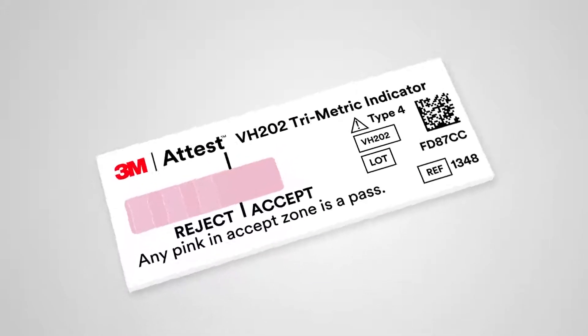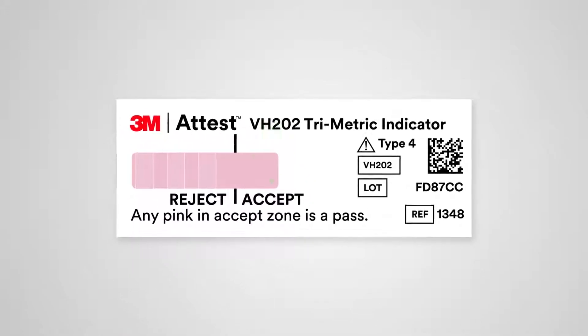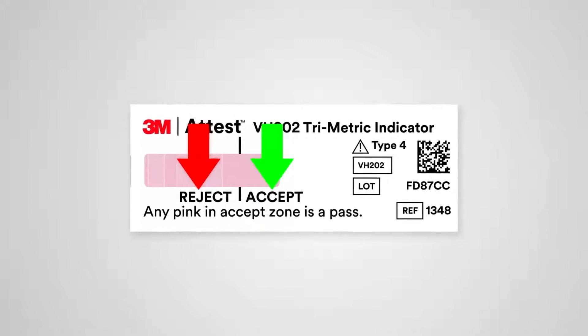The 3M Attest Trimetric CI also has clearly labeled Accept and Reject zones for interpretation and a distinctive backside printed with the red 3M logo, which makes it easy to find in the pack.